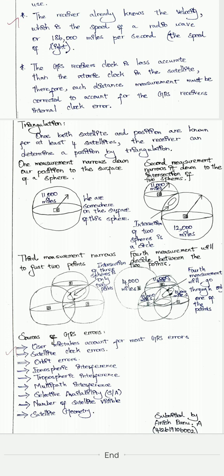GPS errors come from a list of sources. User mistakes account for most GPS errors. Other sources include satellite clock errors, orbital errors, ionospheric interference, tropospheric interference, multipath interference, selective availability, number of satellites visible, and satellite geometry.